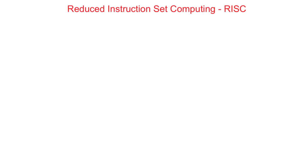With a reduced instruction set computing system, the situation is now reversed. The hardware itself can be kept nice and simple, but the software now needs to be more complicated. In our previous example, there may now no longer be a single machine instruction on the instruction set to carry out something as simple as multiplying x times y.